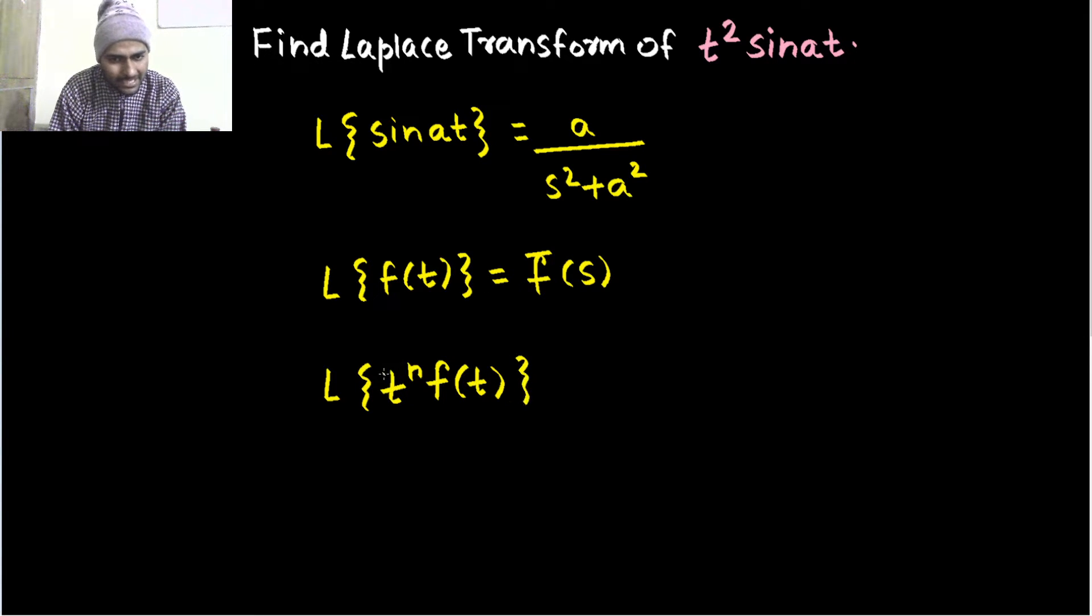Then, as you can say t power n is multiplied. So, remember this n. So, minus 1 power n. If n is there, so nth derivative with respect to s of what? Of this f bar s, which is the Laplace transform which we have got.